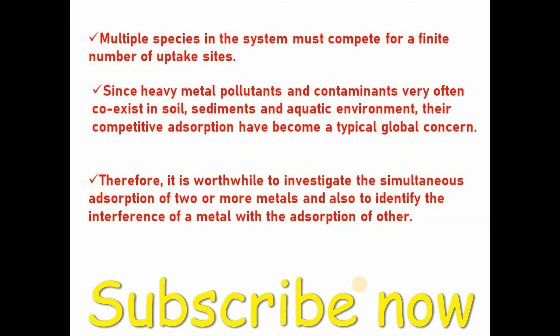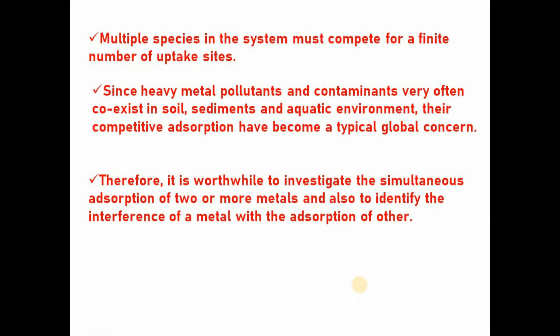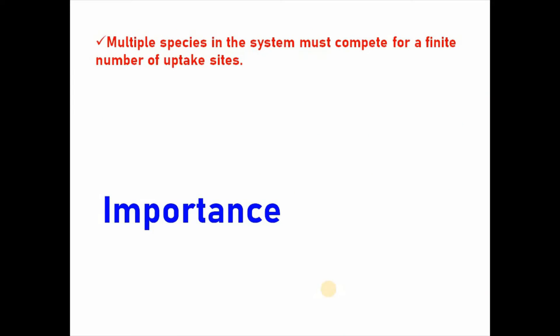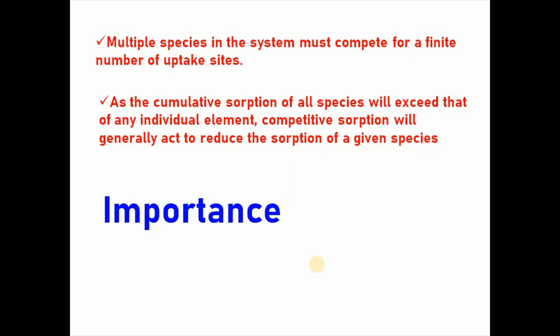Therefore, it is worthwhile to study the simultaneous adsorption of two or more metals and also to identify the interference of a metal with adsorption of other metals, metalloid or anionic species. It is interesting to note that multiple species in the system must compete for a finite number of uptake sites. As the cumulative adsorption of all species will exceed that of any individual element, competitive sorption will generally act to reduce the sorption of a given species.